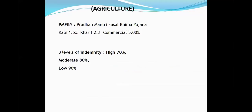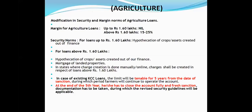PM Fasal Bima Yojana: premium rates — Rabi crops: 1.5%; Kharif crops: 2%; commercial/horticulture crops: 5%. Indemnity levels: if crop risk is high — 70% indemnity; moderate risk — 80%; low risk — 90%. This is a very important circular and exam questions are expected from here.